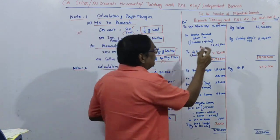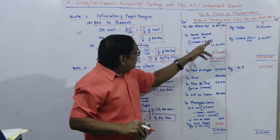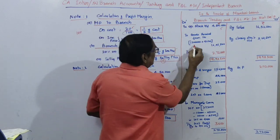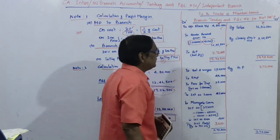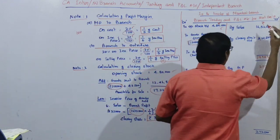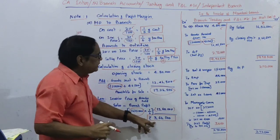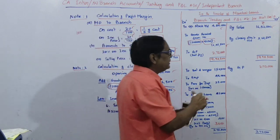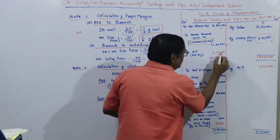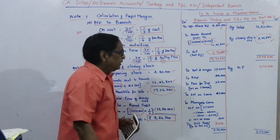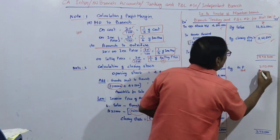Now we prepare the branch trading account in the books of Mumbai branch. Opening stock plus goods received from head office including goods in transit totals Rs. 21,46,500 on the debit side. Sales of Rs. 16,32,000 and closing stock of Rs. 3,66,500 are on the credit side. The gross profit, which balances the account, comes to Rs. 2,72,000. This gross profit is transferred to the profit and loss account.